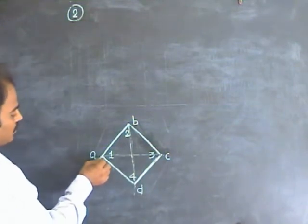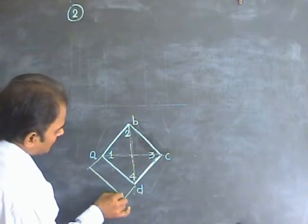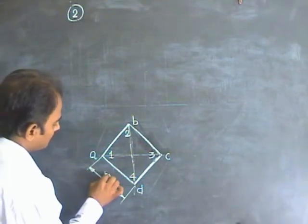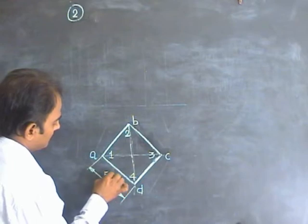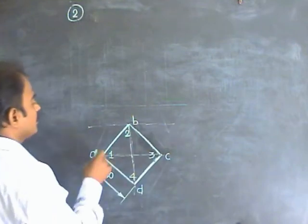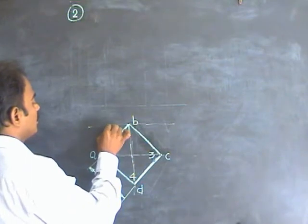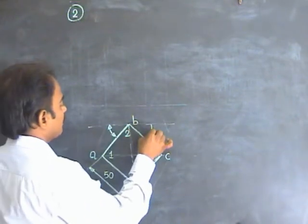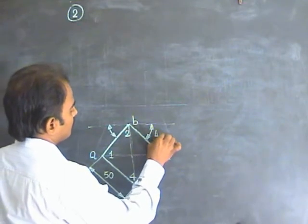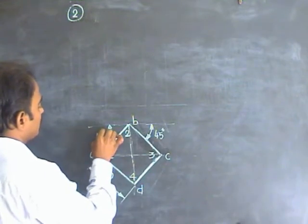Given the base side is 50 mm, this one dimension is sufficient to define the cube. At the same time, the vertical faces are equally inclined, so the equal inclinations are 45 degrees on either side. This is 45, this is 45, and here also you get 45.